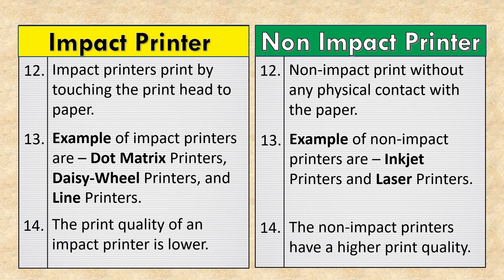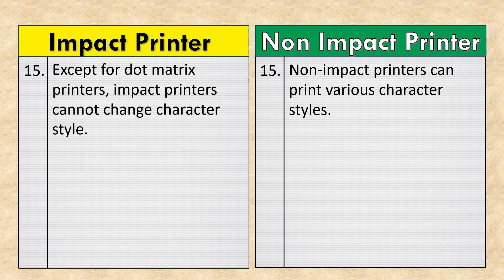The print quality of an impact printer is lower, while non-impact printers have a higher print quality. Except for dot matrix printers, impact printers cannot change character style. Non-impact printers can print various character styles.